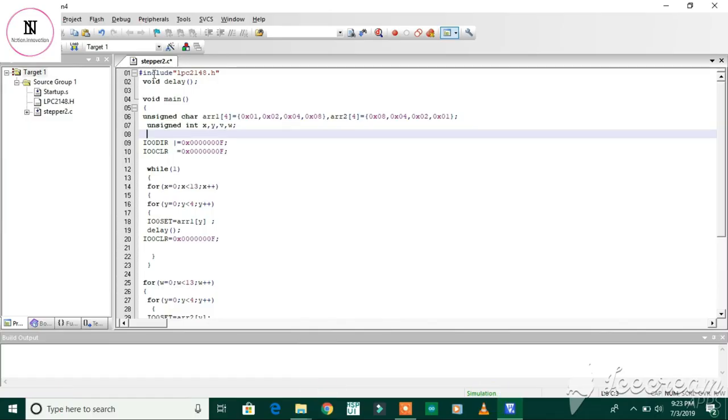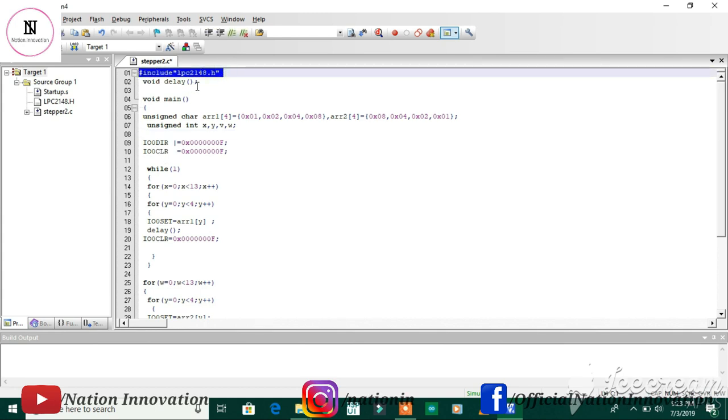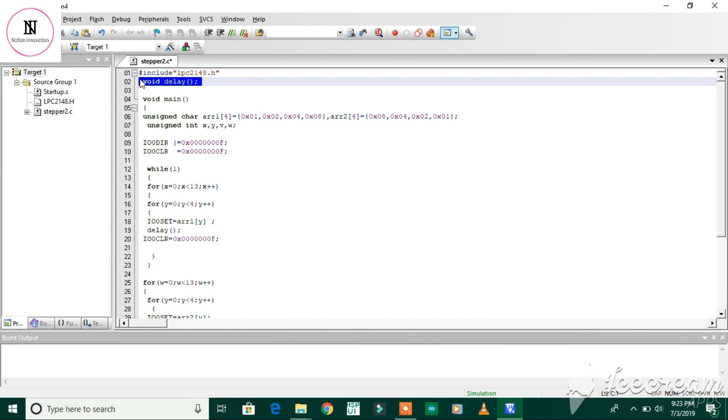This is the code for the stepper motor control using ARM7 LPC2148 microcontroller. The first line is for the header file and we are defining the delay function and coming to the main function.